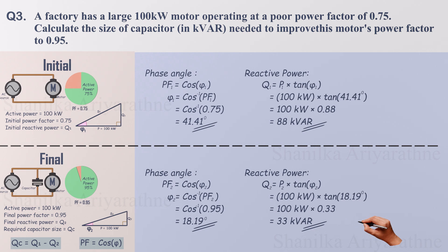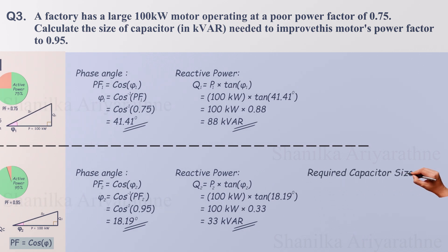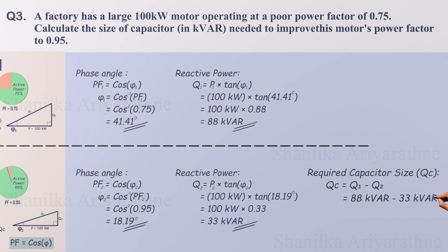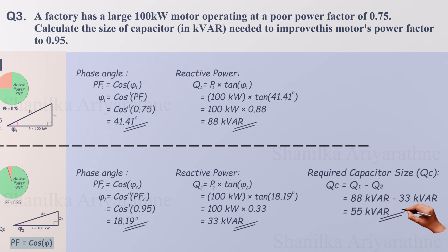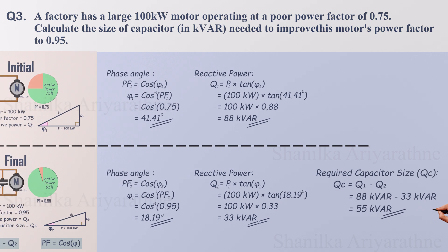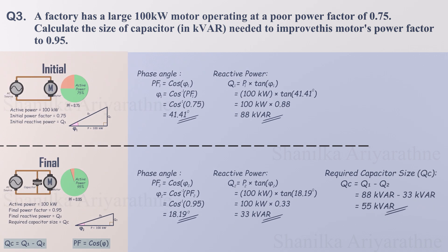Now the final step: we can calculate the capacitor size. Q1 is 88 kVAR and Q2 is 33 kVAR, so QC is 55 kVAR. We need a capacitor bank rated at 55.3 kVAR. This clever device will act like an electrical spring, storing and releasing energy in just the right way to bring our power factor up to that efficient 0.95.